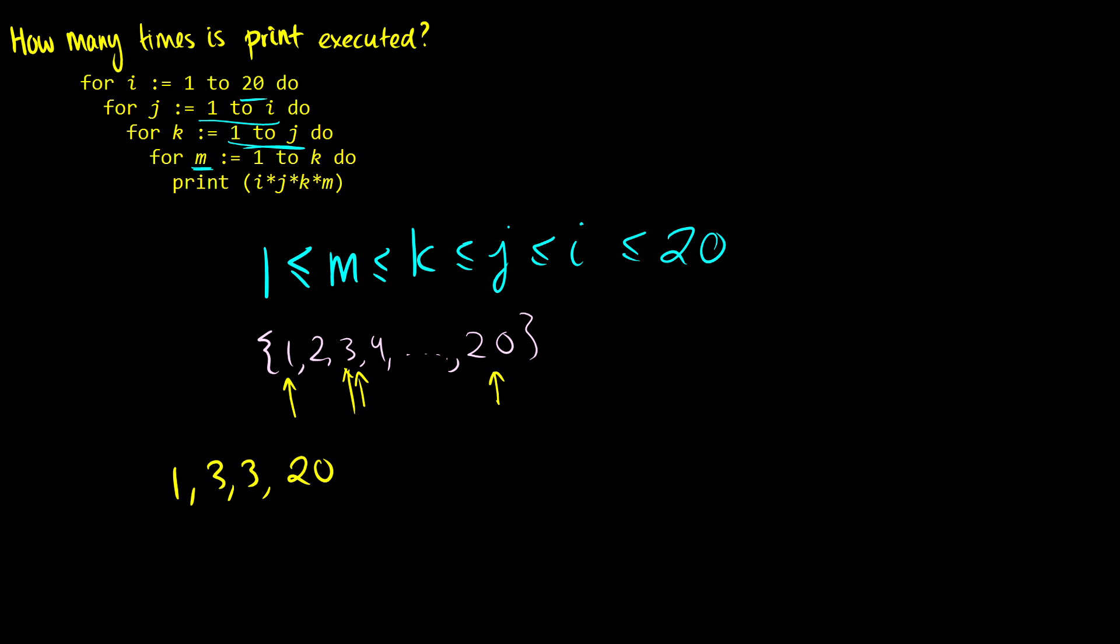So if we take a look, the lowest becomes m, then the next is k, then we have j, and then we have i. So this works. And it's basically saying we can pick any four numbers from here with repetition, and we just order them, and that's a possibility for the algorithm. So that is the number of times print is executed. It's the number of times you can pick 4 from 20 with repetition. So what's the formula for choosing 4 from 20? Well, it's like having 20 boxes, then taking 4 balls and putting them in the 20 boxes. So our end result is going to be 20 plus 4 minus 1 choose 4, which is the same thing as 23 choose 4.